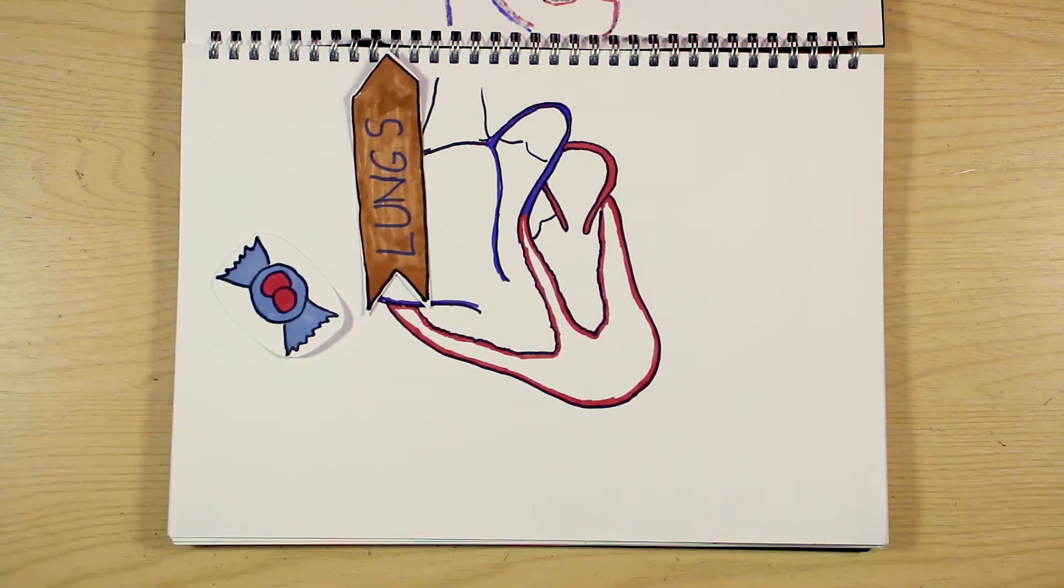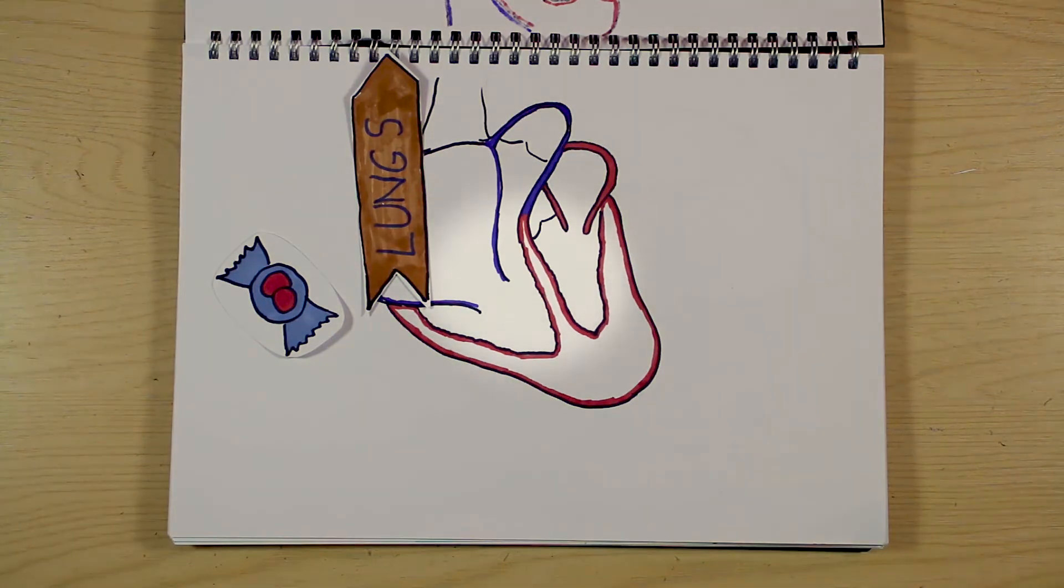Each side of the heart is split into two chambers, an atrium at the top and a ventricle underneath. Let's start in the left atrium. This is where oxygen-rich blood from the lungs arrives, and from here the blood will pass through the mitral valve into the left ventricle.